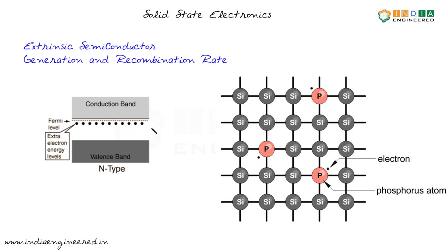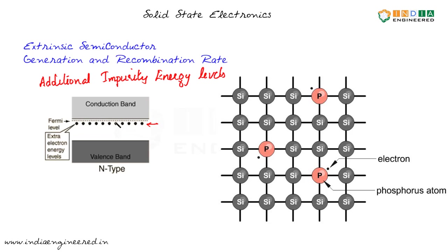Adding donor impurities generates additional energy levels in the band structure. Phosphorus creates extra electron energy levels located just below the conduction band. The electrons at these energy levels need very little energy to move to the conduction band. We will discuss the Fermi level later. The same phenomenon can be explained using either bond diagrams or band structure. In the case of P-type material, which we will see next, it is easier to explain using band structure.